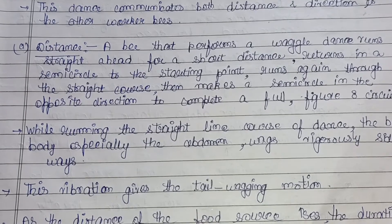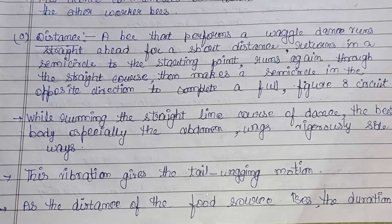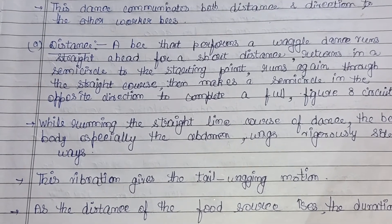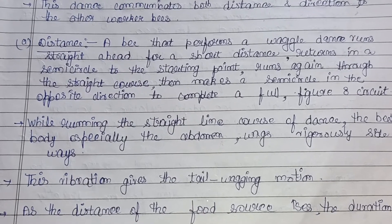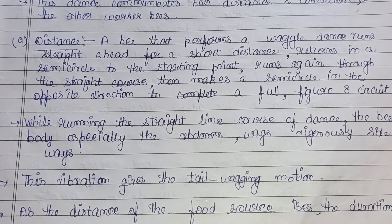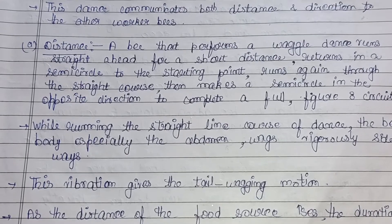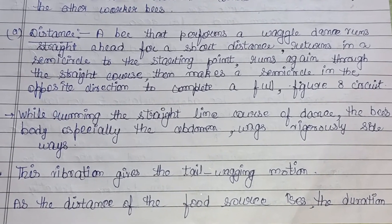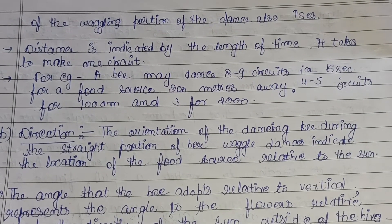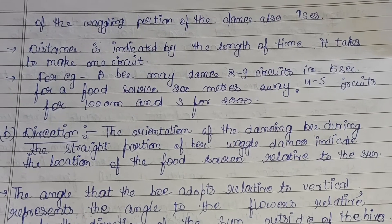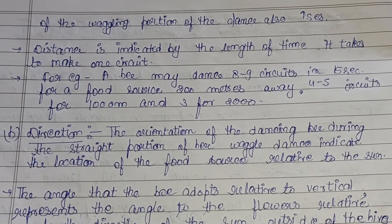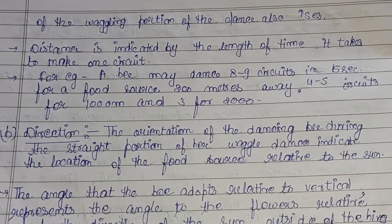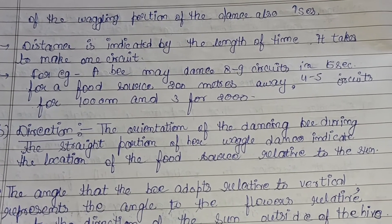While running the straight-line course, the bee's body — especially the abdomen — wags vigorously sideways, giving the tail-wagging motion, which is why it is also known as the tail-wagging dance. As the distance to the food source increases, the duration of the wagging portion of the dance also increases proportionally.